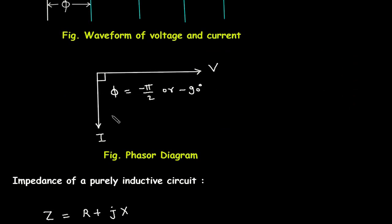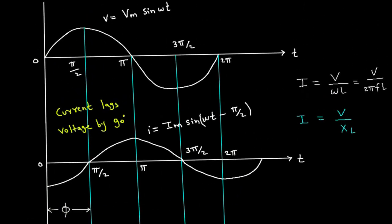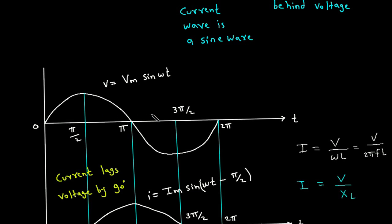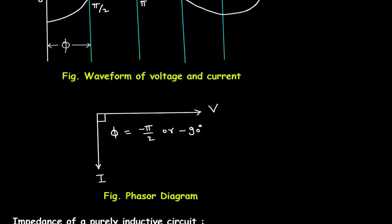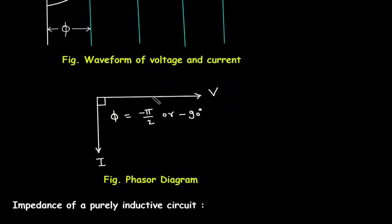Phasor diagram. Here we are taking voltage as a reference, because in the waveform it starts from 0. The current is lagging, so this direction is called the leading direction and this direction is called the lagging direction.